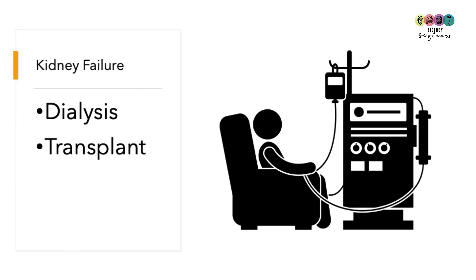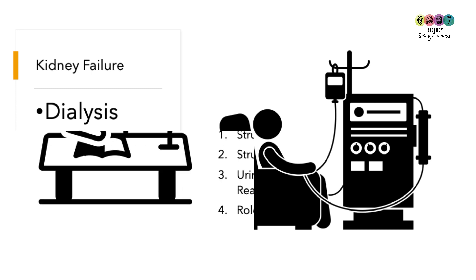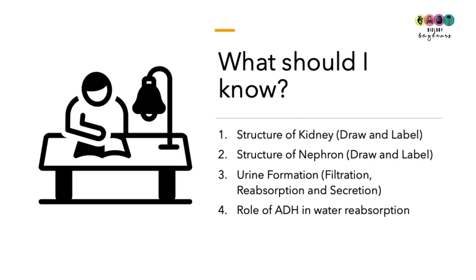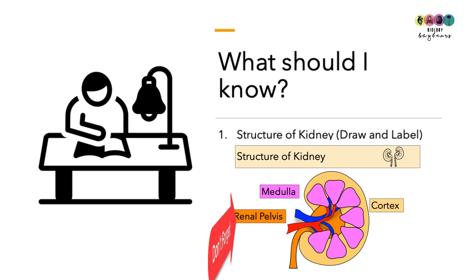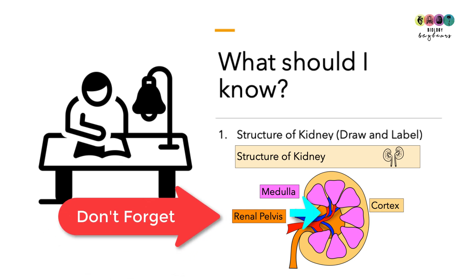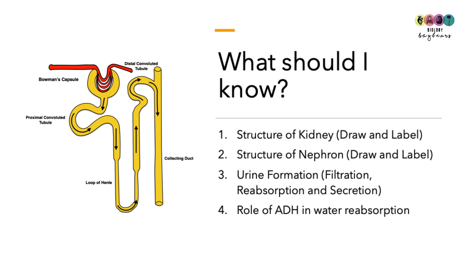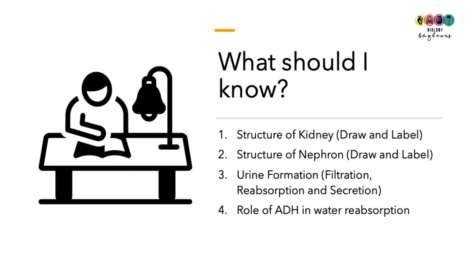If something goes wrong with your kidneys, you can survive with one healthy kidney. If both are problematic, dialysis is an option, and transplants are also available. For revision: know the structure of the kidney — draw and label it, including the renal pelvis. Know the detailed structure of the nephron, draw it and tell the story of urine formation on your diagram, and know the role of ADH in water reabsorption.